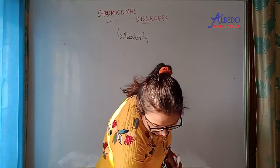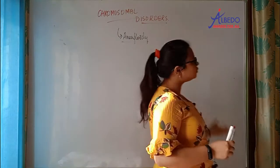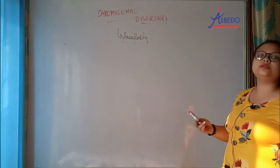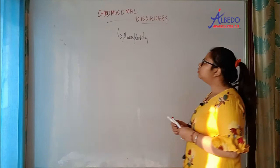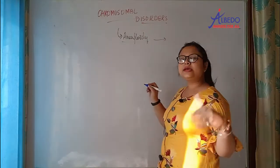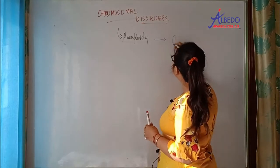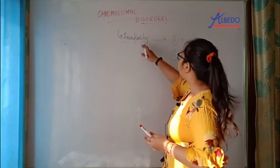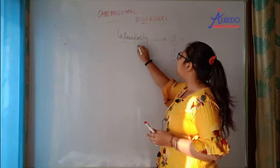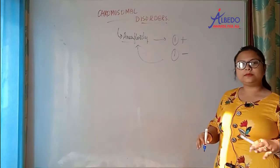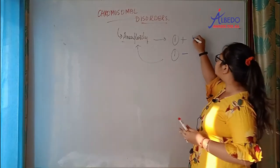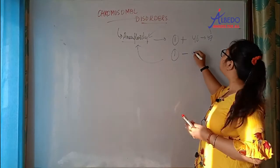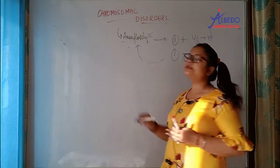What is aneuploidy? What is your normal ploidy? One set is haploid, two sets are diploid. Aneuploidy is when you have an abnormal number of chromosomes — for example, if a person has 47 chromosomes instead of 46, that person is aneuploid. Similarly, if a person has 45 chromosomes, that person is also aneuploid.